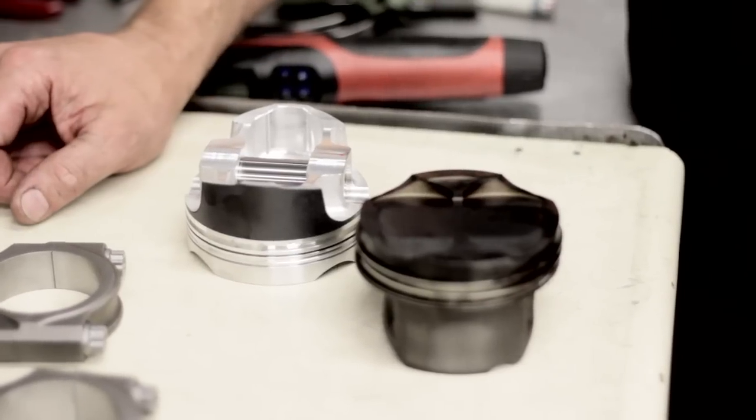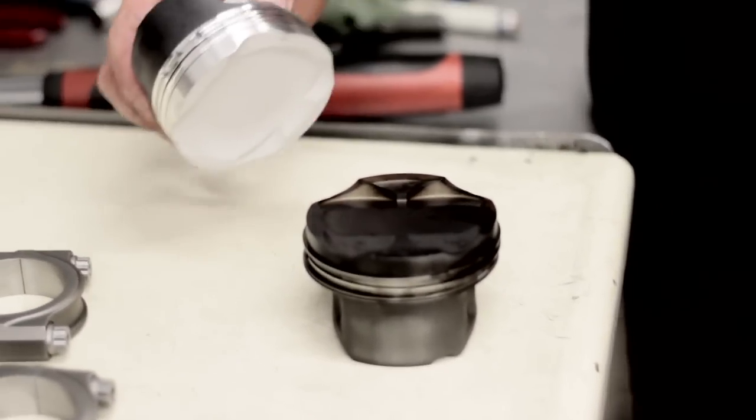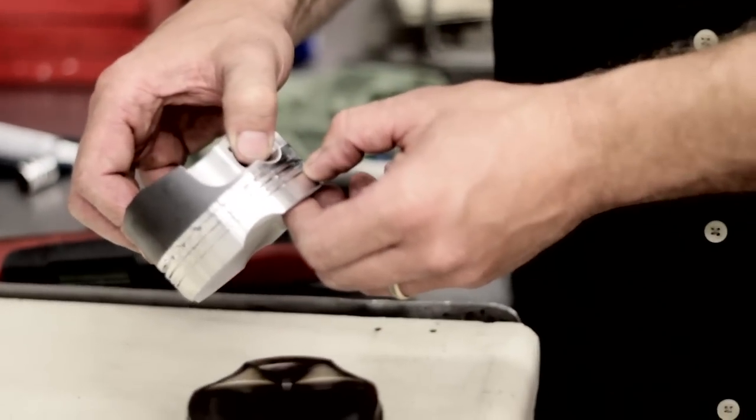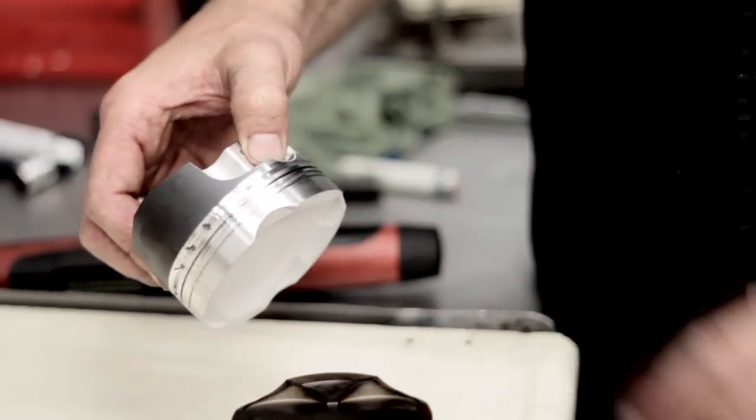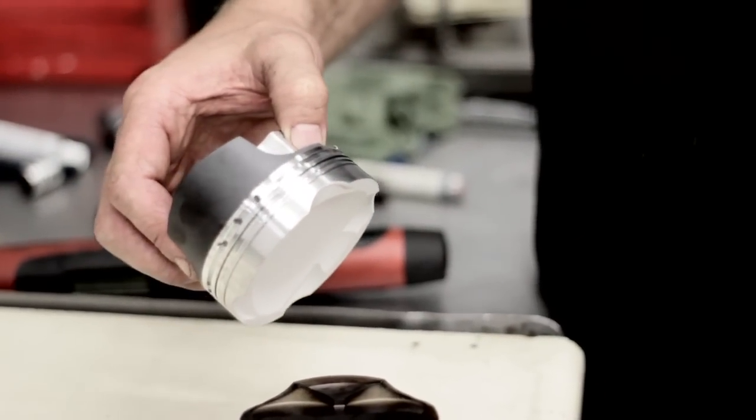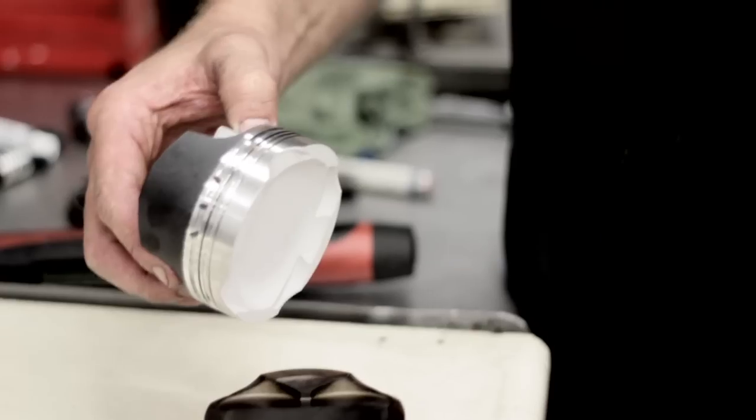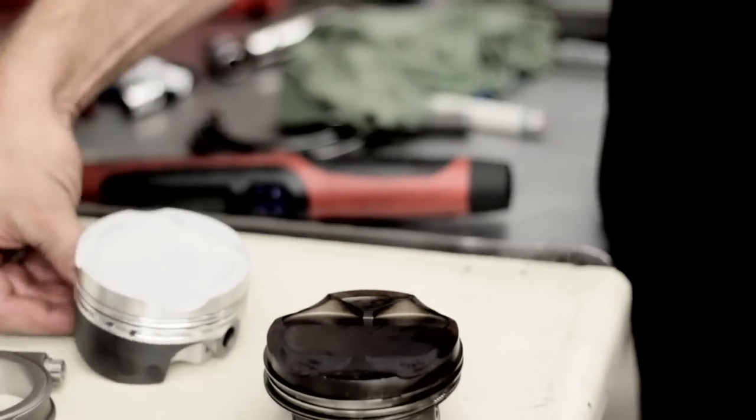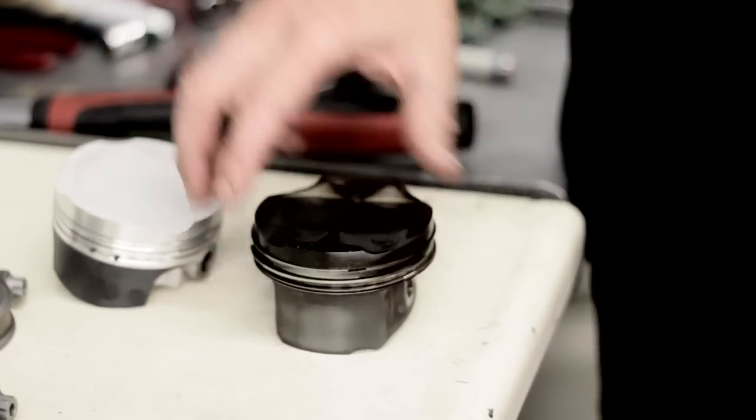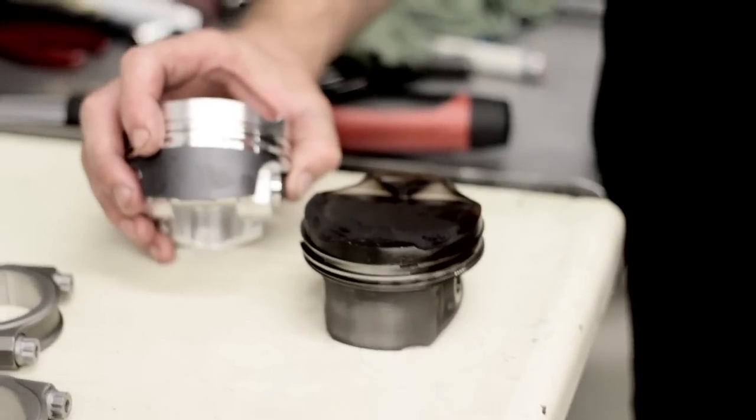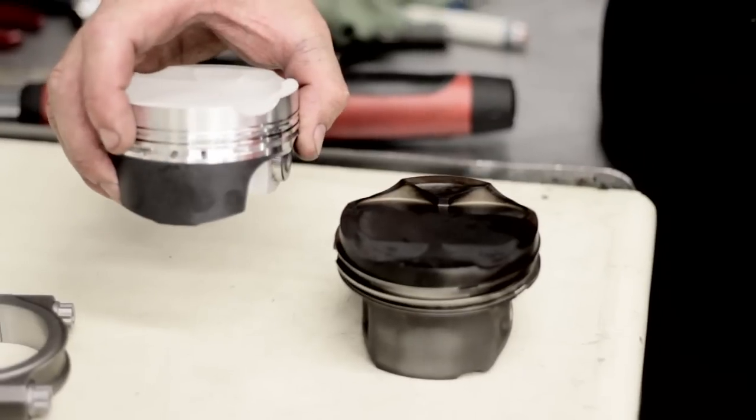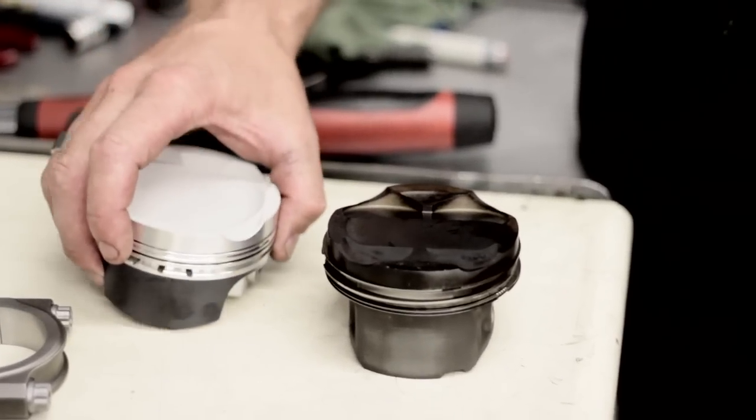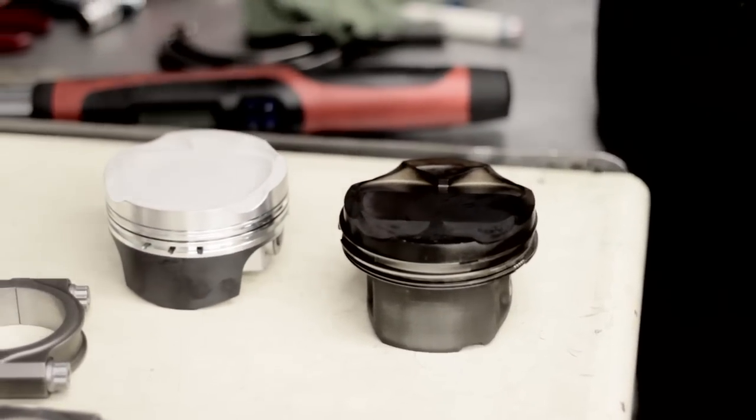The other thing is it's actually got a little accumulator groove in between the first ring and the second ring that's helping the rings actually stick to the cylinder wall under boost. The coated skirt is helping quite a bit also. We can run a tighter bore clearance with the coated skirt even though it is a forged piston. We don't get a lot of piston rock so the rings aren't rocking in the bore.